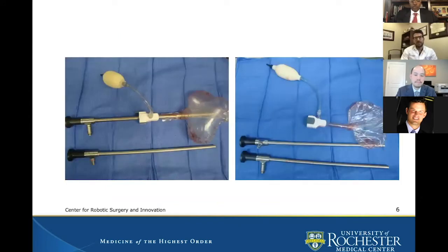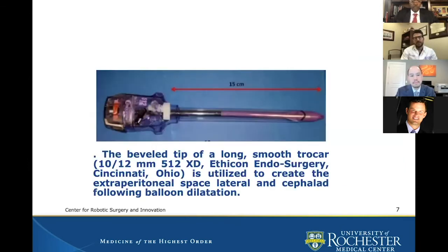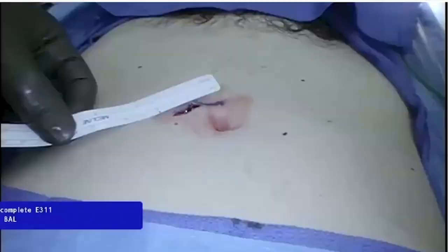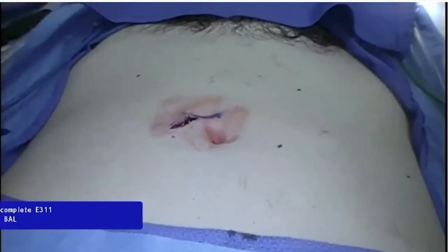You create the space under direct vision with a camera inside. Usually I use a standard camera, as opposed to the DaVinci camera, to develop the space initially, and subsequently place the robotic camera in. This instrument is also key in terms of creating the space laterally. The challenge with multiport extraperitoneal surgery is that you cannot get laterally enough to place the assistant ports — that can be a challenge.